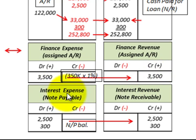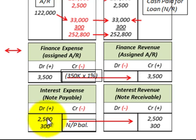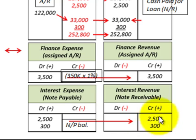There is also interest expense on the notes payable for Corporation A, and the bank recognizes it as interest revenue on the note receivable. We take a percentage of the outstanding notes payable balance to calculate the interest expense for the period. In this case, it was $2,500. Bank B recognizes that as interest revenue of $2,500.